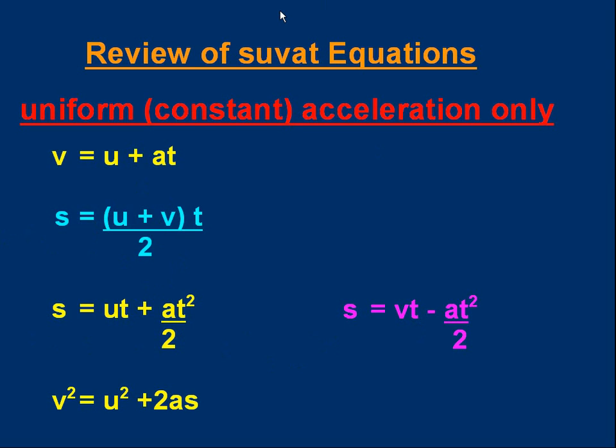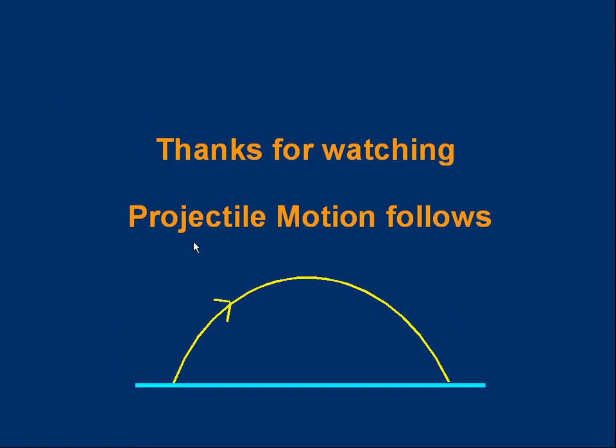Note, there are five variables: s, u, v, a, and t. If you know any three of them, you can find the other ones. For example, if you know v, u, and a, you can find t. If you know v, u, and a, you can also find s. And it's a case of being familiar enough with the equations to know which one to use. Well, thanks for watching. I hope you know a bit more about the SUVAT equations. If you watch the videos on projectile motion, you'll find that they need knowledge of the SUVAT equations. Thanks for watching.